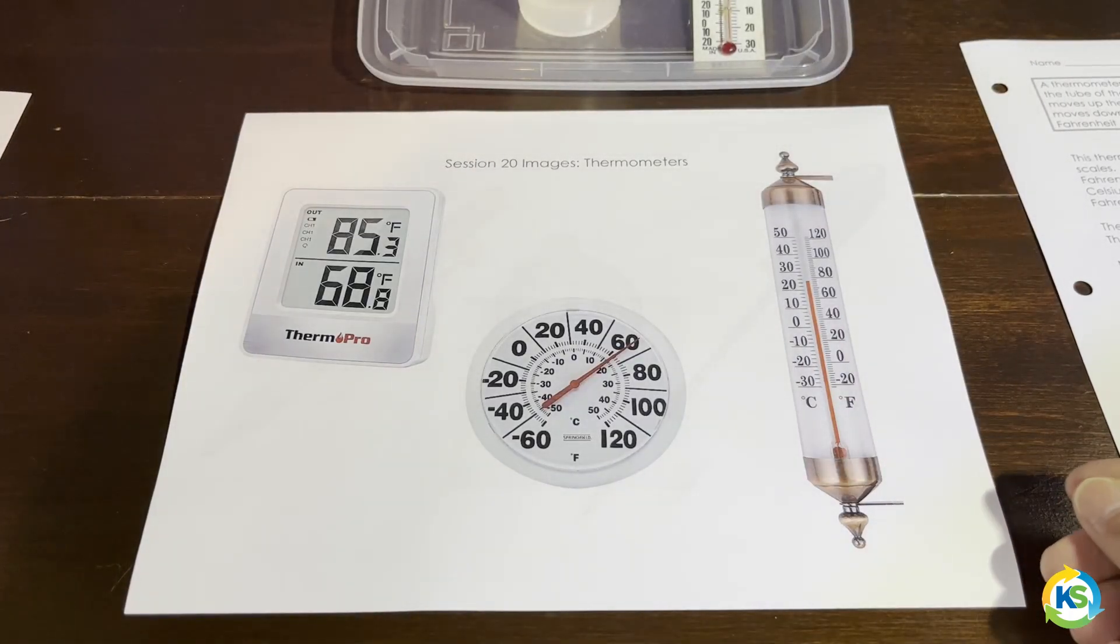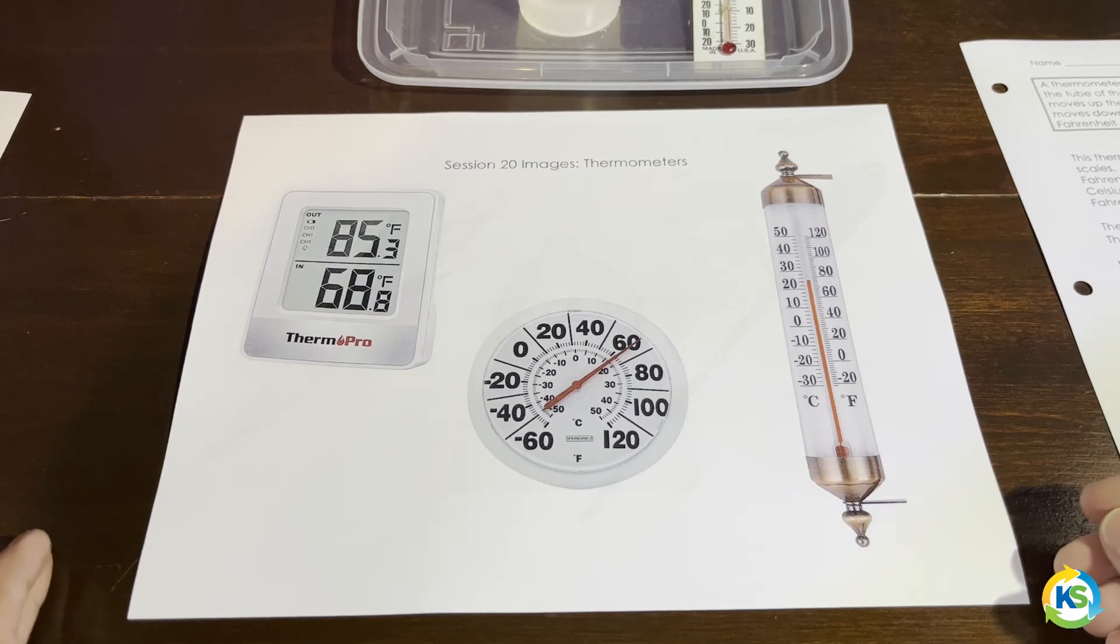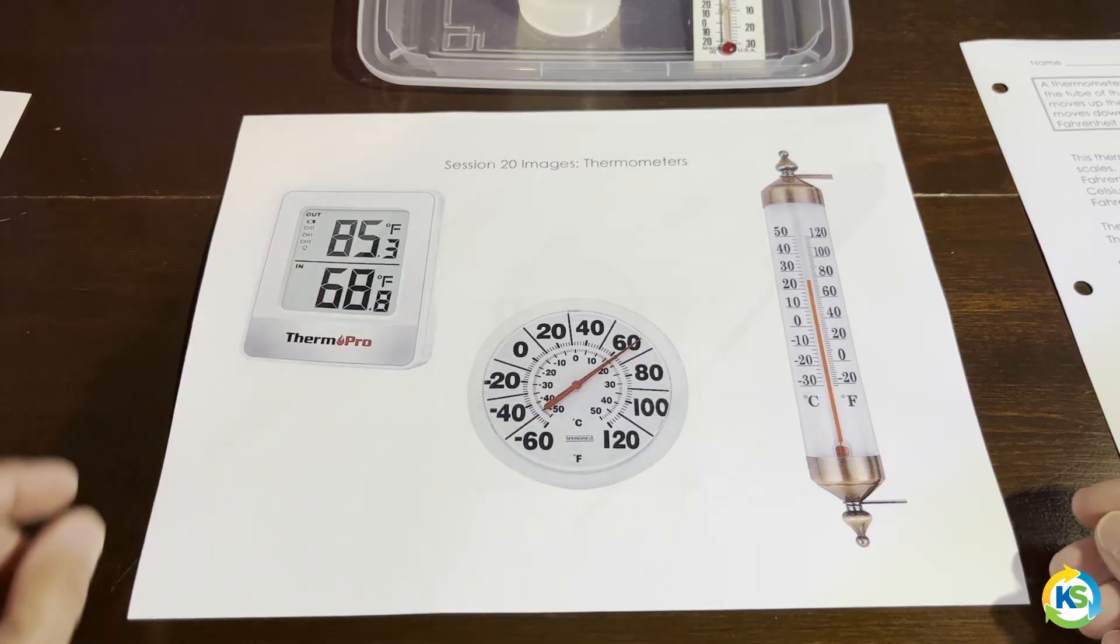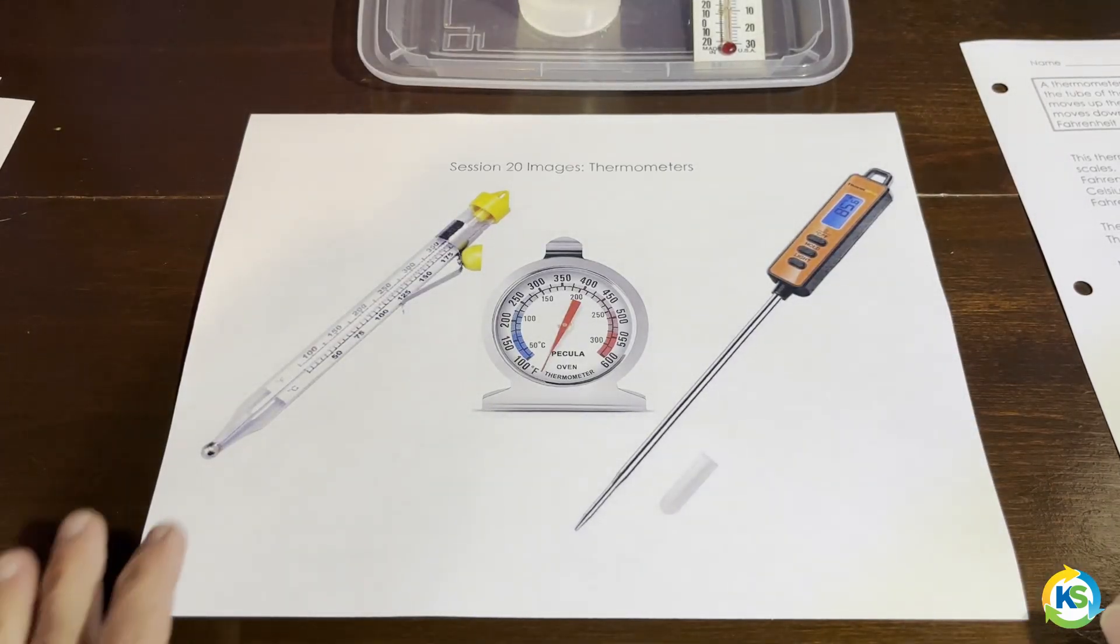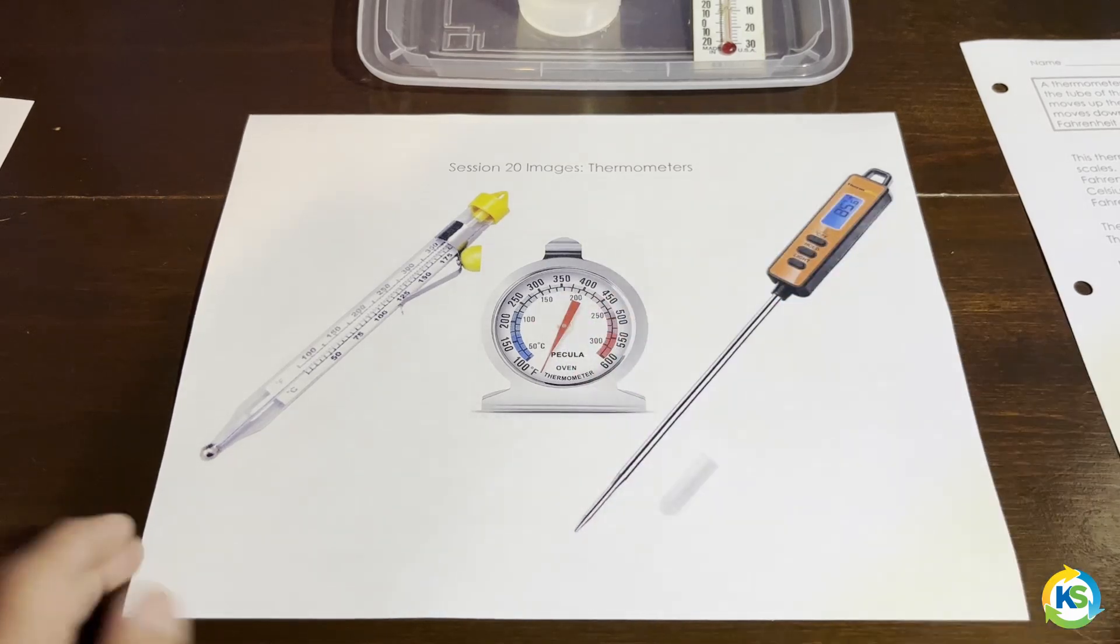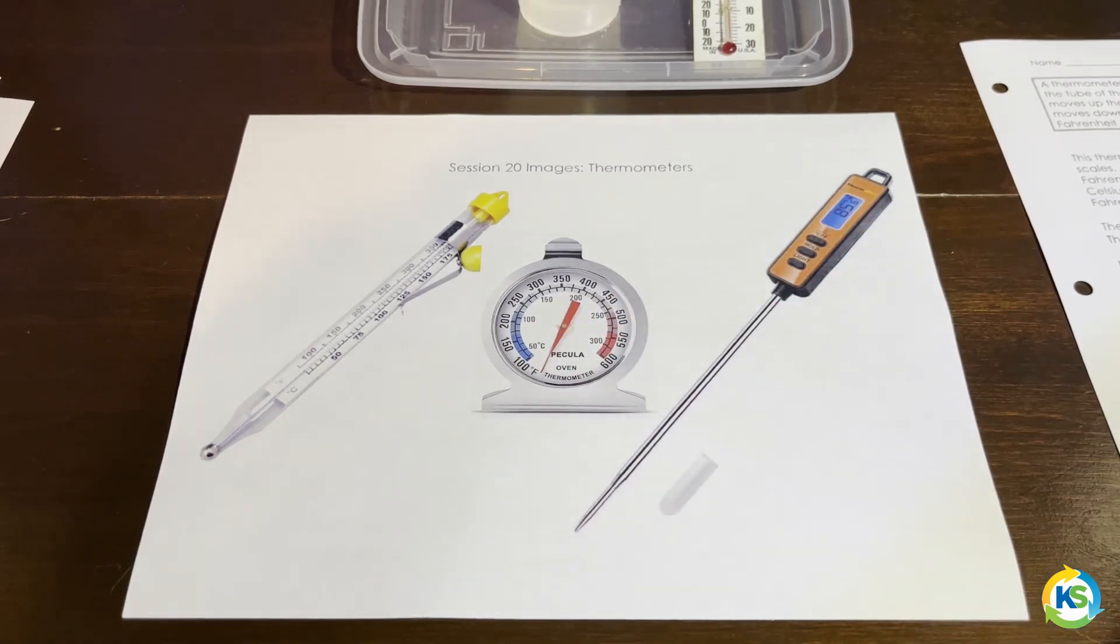This image shows several types of outdoor thermometers, digital as well as more traditional. And the third shows cooking thermometers: meat thermometer, oven thermometer, and a candy thermometer.